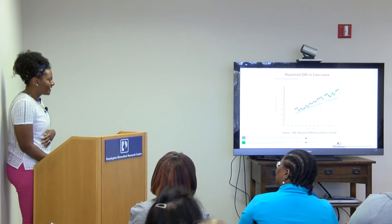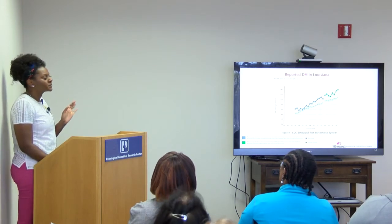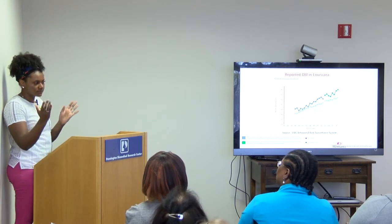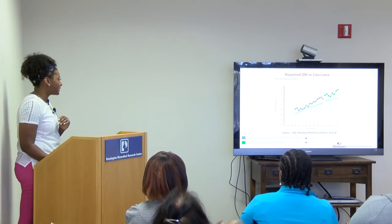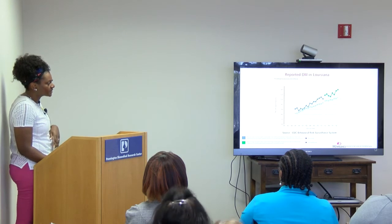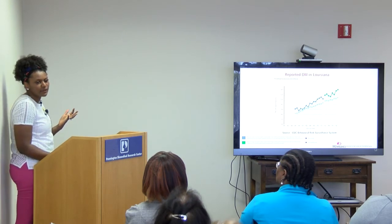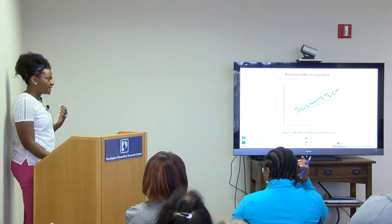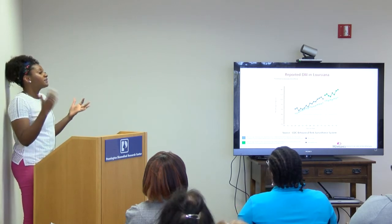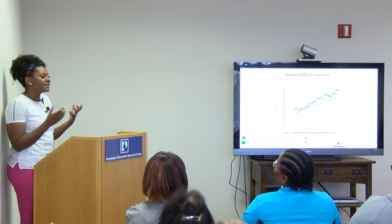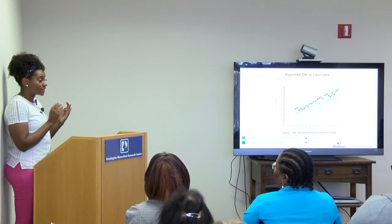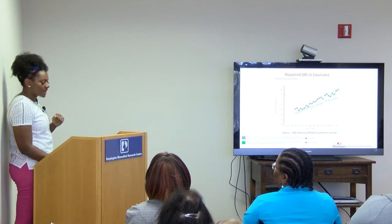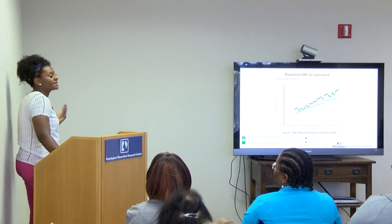Looking at the data, Louisiana is at about 14 percent prevalence for diabetes while the rest of the country is around 11 percent. That means we're one of the unhealthiest states in the country, though West Virginia is actually the worst. Colorado is the healthiest state with the least amount of diabetes.